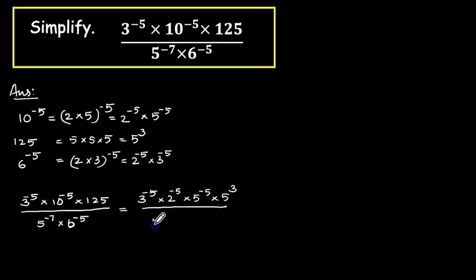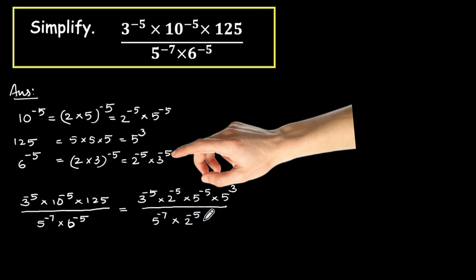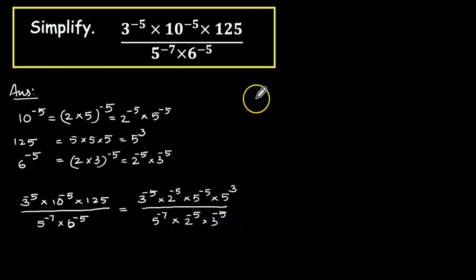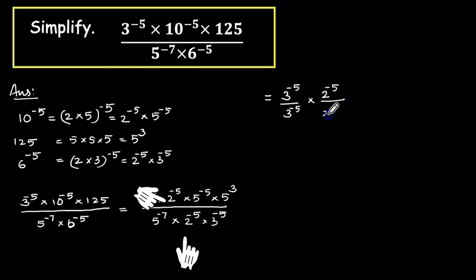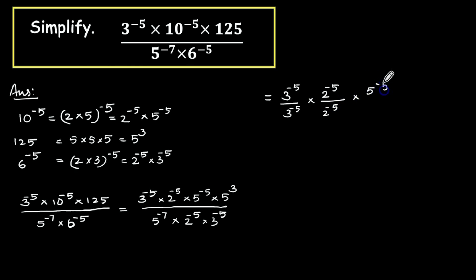We can write 2 raise to minus 5 into 3 raise to minus 5, and for 125 we write 5 raise to 3, all divided by 5 raise to minus 7 into 2 raise to minus 5 into 3 raise to minus 5.